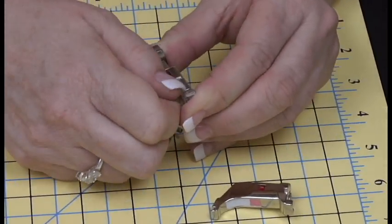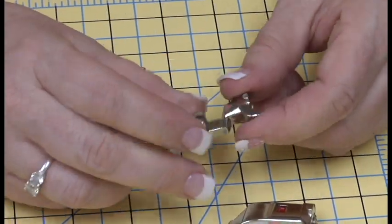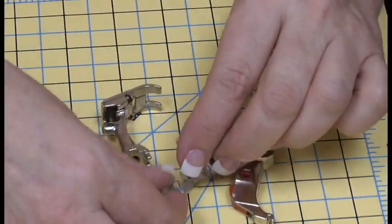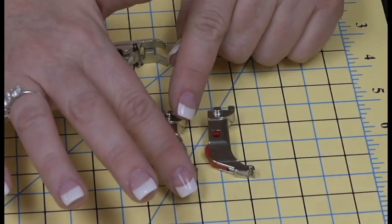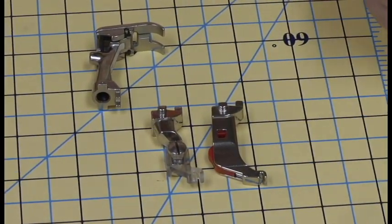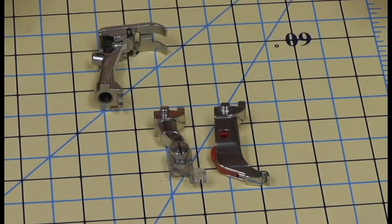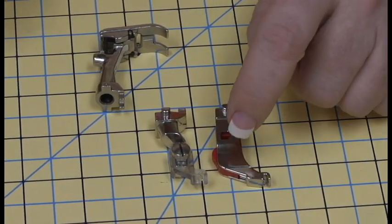I'll put this on the machine in a minute, but I want to show you why I prefer one versus another. Do you see how these are basically the same? This is all metal, but this is metal and acrylic. Which one's going to hold up longer? The metal, of course. If you have a choice of buying, I'd like you to buy this one.